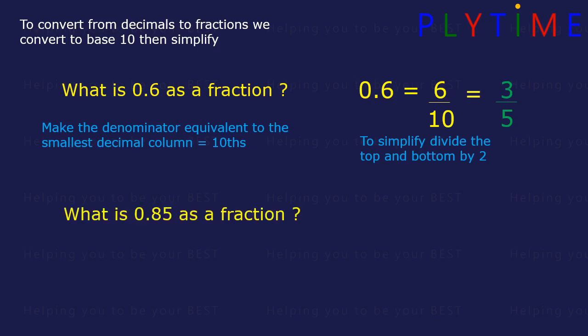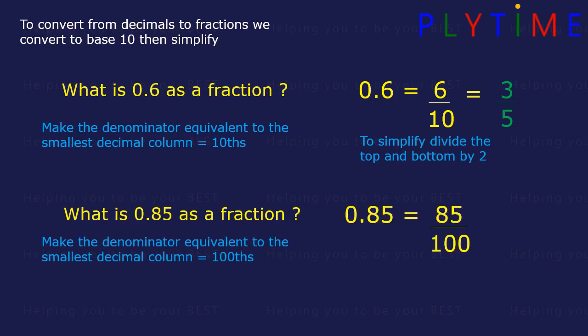What's 0.85 as a fraction? Make the denominator equivalent to the smallest decimal column, in this case hundredths. So 0.85 equals 85 over 100. To simplify, divide both the top and bottom by 5. 100 divided by 5 equals 20, and 85 divided by 5 equals 17. So the fraction is 17 over 20.